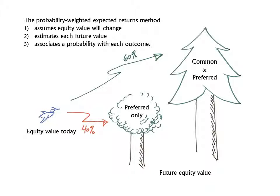The probability weighted expected returns method, which we'll call PWRM, assumes the equity value will change. Typically, an appraiser will consider four or more scenarios, such as going public, selling the company, or filing for bankruptcy. We show only two scenarios here. In the most optimistic scenarios, equity value is high enough for payouts to common and the preferred. In the pessimistic scenarios, only the preferred gets paid.